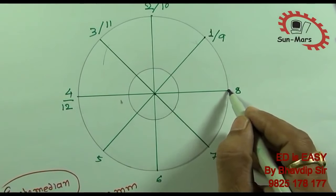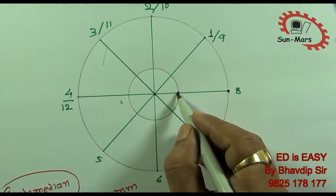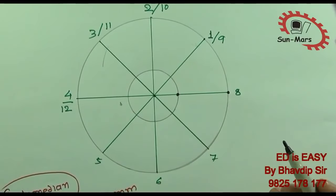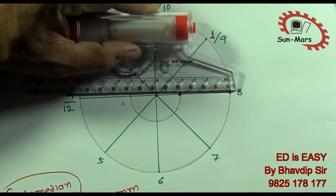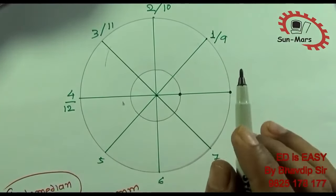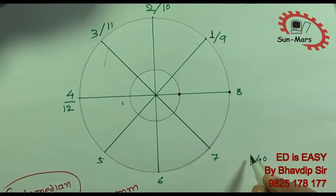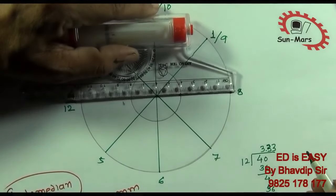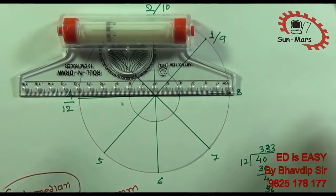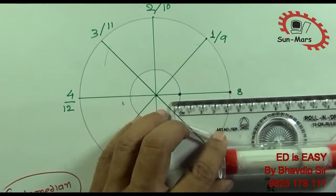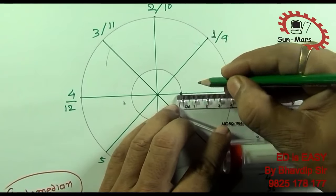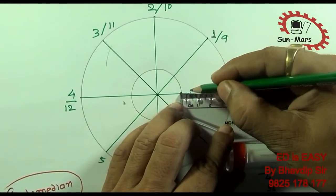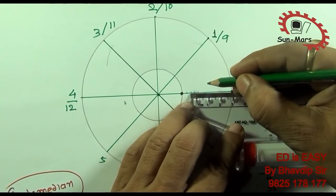Now, this is my spiral. I have a small radius equal to 20, and these measurements are 40. So 40 divided by 12 gives you approximately 3.33. You have to mark 3.33 equal divisions here. Here you will have 12 equal divisions, each of 3.33.